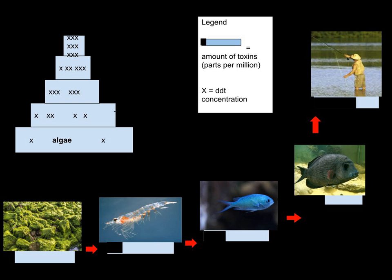For example, herring contains mercury at approximately 0.01 parts per million (ppm), and shark contains mercury at greater than 1 ppm. DDT is thought to biomagnify, and biomagnification is one of the most significant reasons it was deemed harmful to the environment by the EPA and other organizations. DDT is stored in the fat of animals and takes many years to break down, and as the fat is consumed by predators, the amounts of DDT biomagnify. DDT is now a banned substance in many parts of the world.